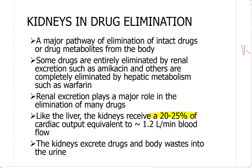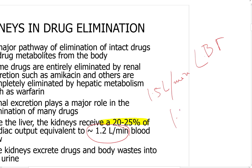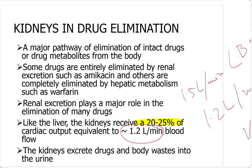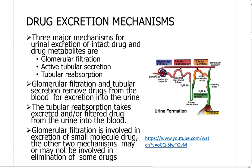Like the liver, the kidney receives about 20 to 25 percent of the cardiac output, which is about 1.2 liters per minute — that's kidney blood flow. For comparison, liver blood flow is also 1.2 liters per minute. The kidney excretes drugs and other body waste products.